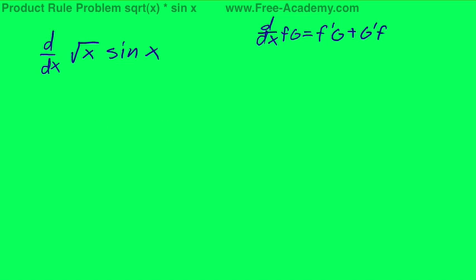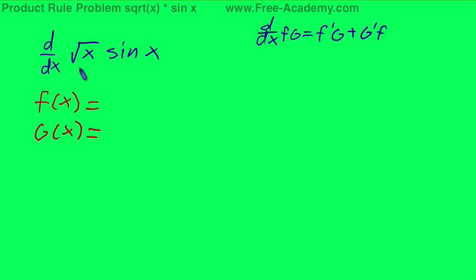Now this isn't hard, it's just a little bit tricky. Let's pick our f of x and our g of x. Just to go in chronological order, f of x will be square root of x, and g of x will be sine of x.